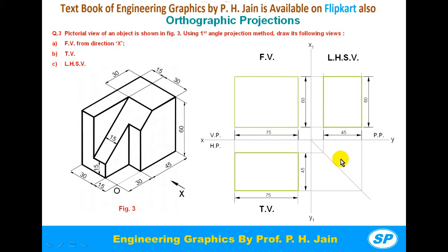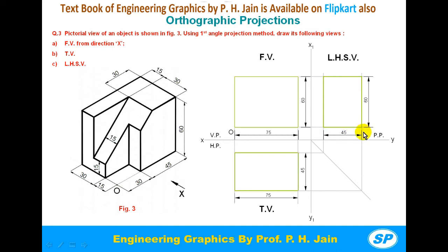After completion of all views, you should give dimensions. The next step is to mark the origin O in each view. Mark origin O in the question figure. From the front direction, origin O is at the left bottom corner, so mark it there in the front view. Looking from the right hand side, origin O is at the right bottom corner, so mark it at the right bottom corner in the left hand side view. Similarly, mark origin O at the left bottom corner of the top view.